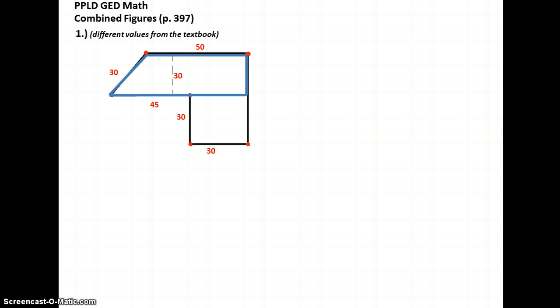The figure in the blue outline is the trapezoid — we'll call that shape number one. And we'll call the square shape number two. What are the qualities about a trapezoid that identify it? It has to have two parallel lines, as indicated by those red arrows right there. Parallel means they're running in exactly the same direction and that they'll never touch each other, like railroad tracks.